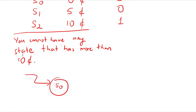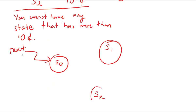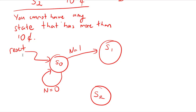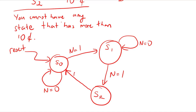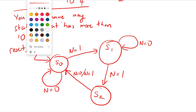Let's draw our state diagram. We have S0, S1, and S2. With the reset signal we start from S0. We'll implement the Moore version here. If we are in S0 and n is 1, we go to S1. If n is 0, we stay in S0. If we are in S1 and n is 0, we stay in S1. If n is 1, we go to S2. As soon as we reach S2, the next clock cycle we go back to S0, regardless of whether n is 0 or 1.